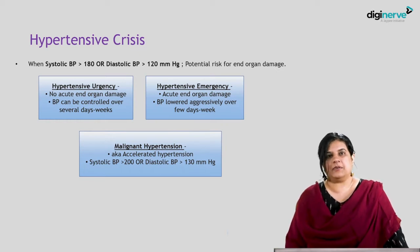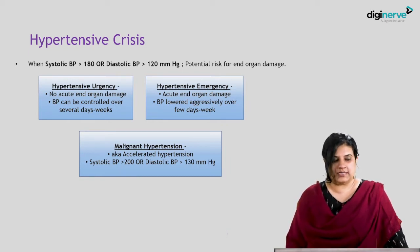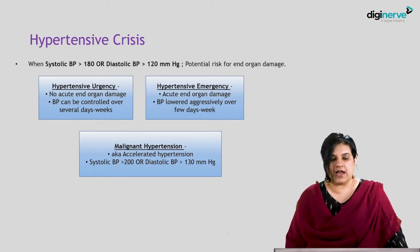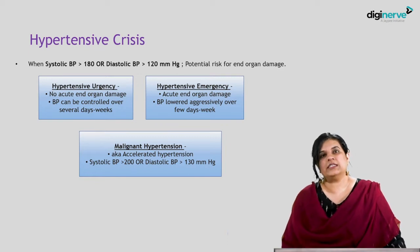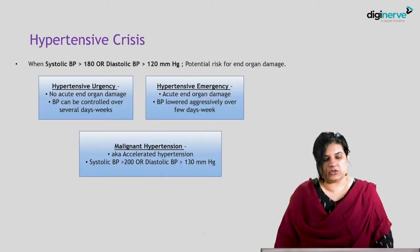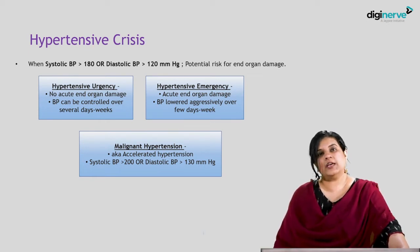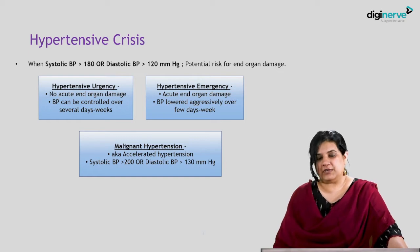Hypertensive urgency is where there is no acute end organ damage, so BP can be controlled over several days or a few weeks. Hypertensive emergency on the other hand can result in acute end organ damage and so we have to be aggressive in lowering the blood pressure. Malignant or accelerated hypertension requires emergent attention, and in this condition the systolic BP is over 200 mmHg or the diastolic BP is over 130 mmHg.